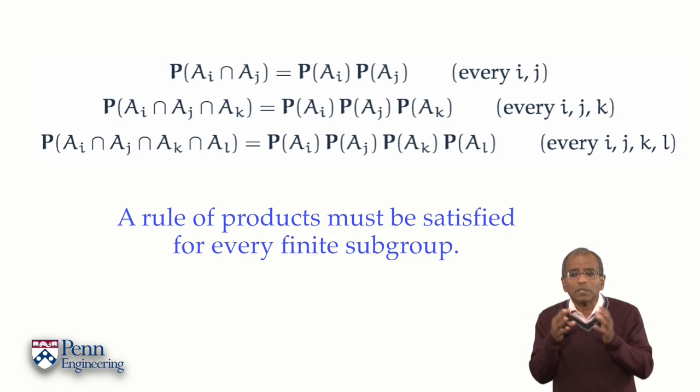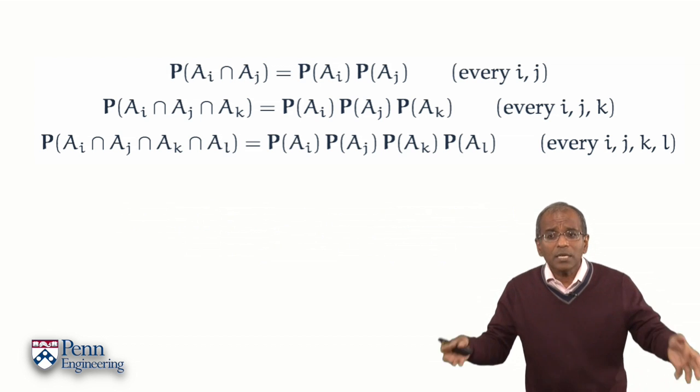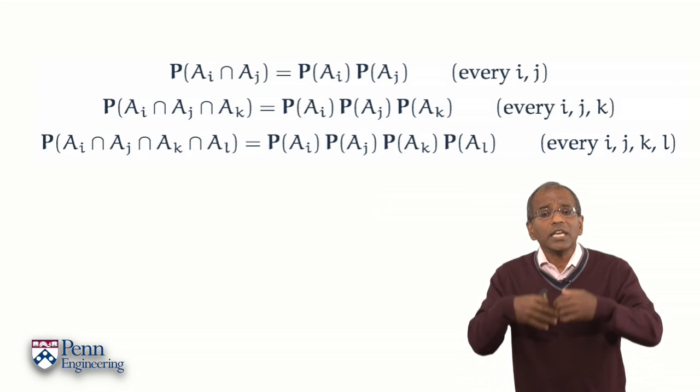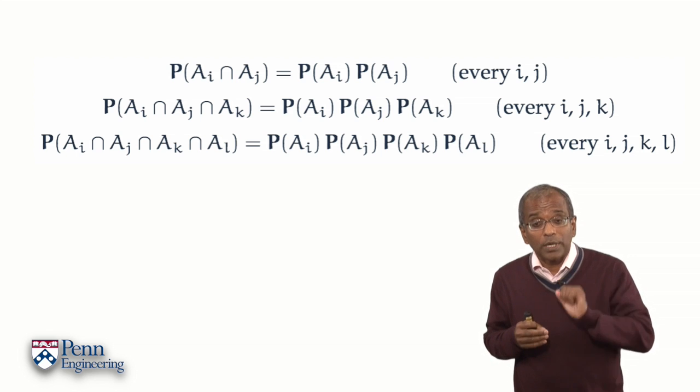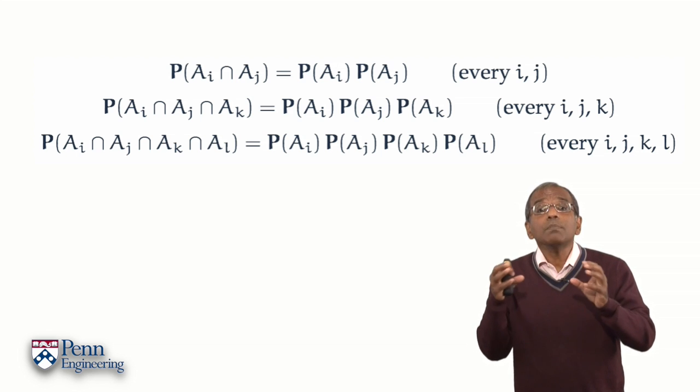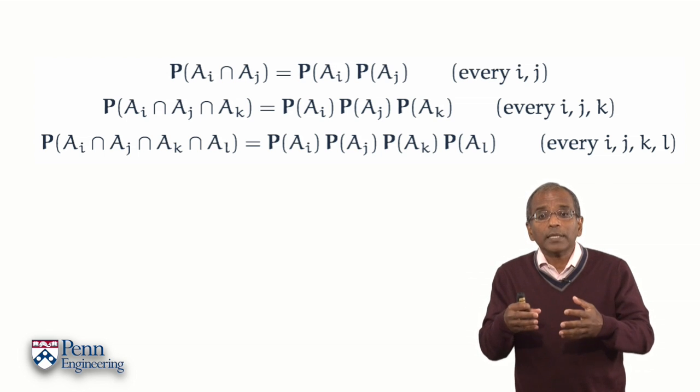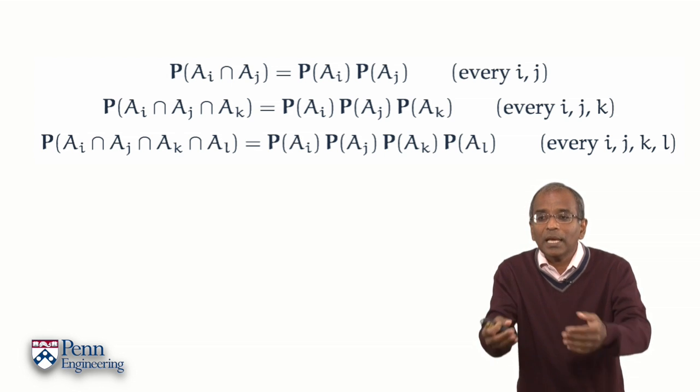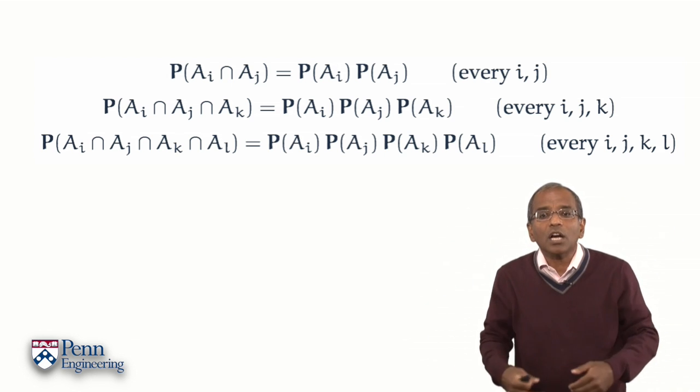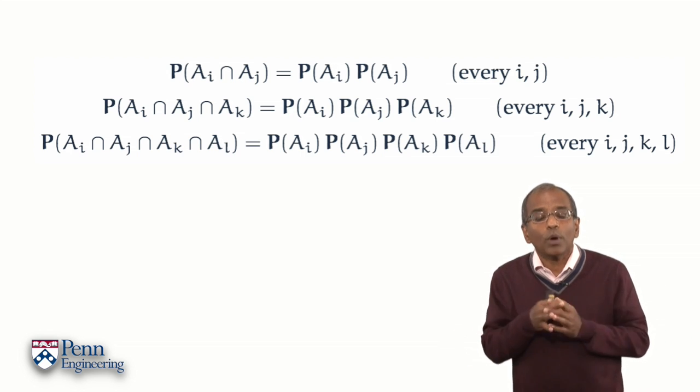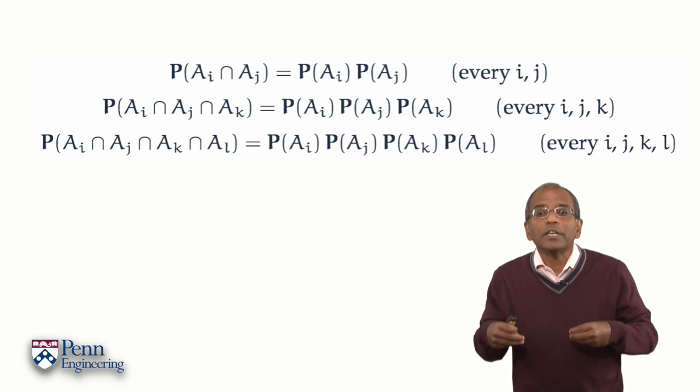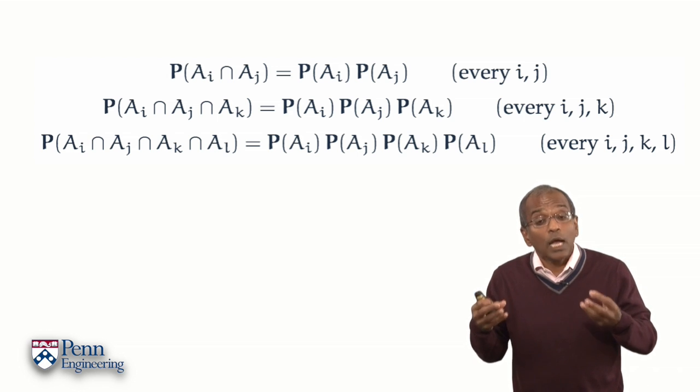This is a formidable number of conditions. How on earth are we going to check whether a large family is actually independent? If we were to check each of these by turn laboriously, we would very quickly give up. Fortunately, in the simplest and most commonly occurring of the settings where independence comes into play, we will find that independence falls into our lap, meaning that all these conditions are tritely and transparently satisfied with the necessity of no checks whatsoever. This is a setting of independent trials, and we will come to this next.